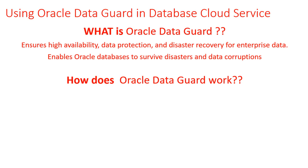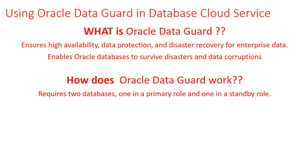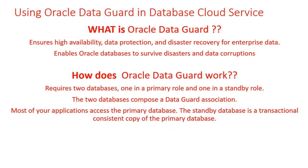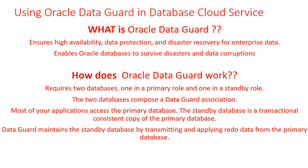How does Oracle Data Guard work? It requires two databases, one in primary and one in standby role. Most applications access the primary database. The standby database is a transactionally consistent copy of the primary database — a true copy. Though you are writing to one database, it's being replicated by Data Guard. Data Guard maintains the standby database by transmitting and applying redo data from the primary database.